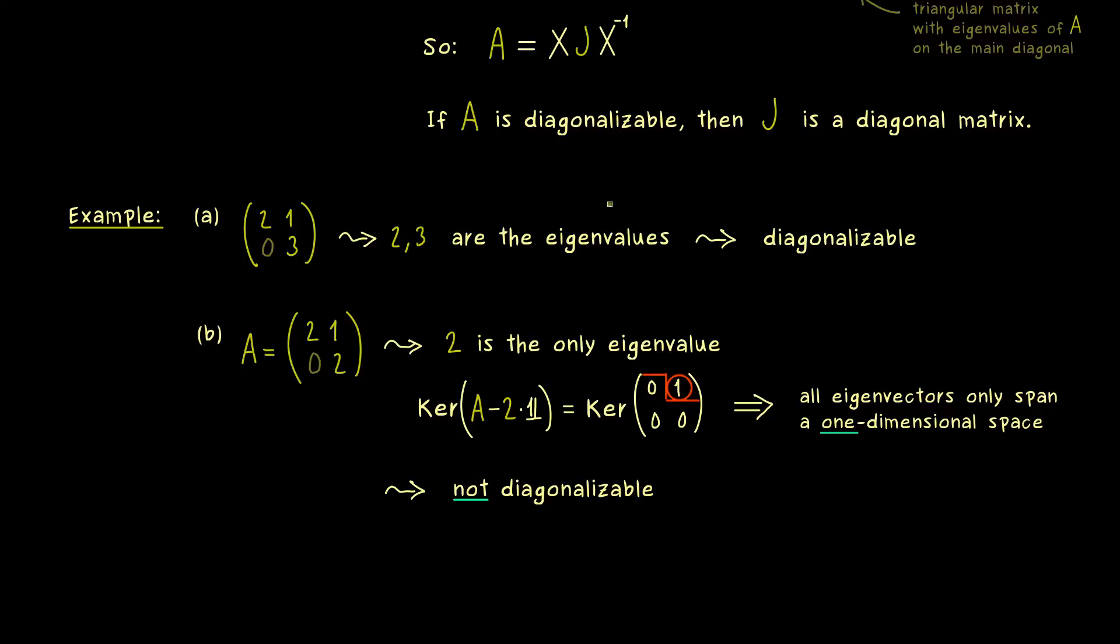Therefore the whole question for the Jordan Normal Form is always, how to substitute the missing directions. And now it turns out that this given matrix A is already in the Jordan Normal Form.